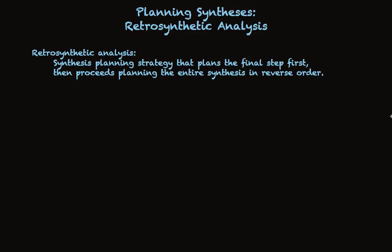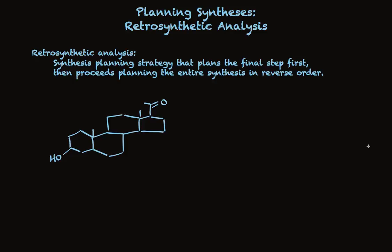Here's a compound that you almost certainly wouldn't know how to make if I just said tell me how to make this from small molecules. It's a steroid with functional groups in typical positions, and it's entirely believable that this compound might be useful in making a variety of steroids for pharmaceutical purposes. It would be really difficult to start with some small molecule and plan an extended synthesis to make this large steroid molecule.